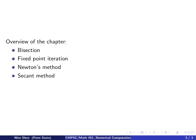In this chapter, we will learn quite a few methods. We'll start with bisection, then move on to fixed point iteration, which is a very useful method in many other areas of mathematics. Then we'll cover the famous Newton's method, and also the secant method. So let's get started.